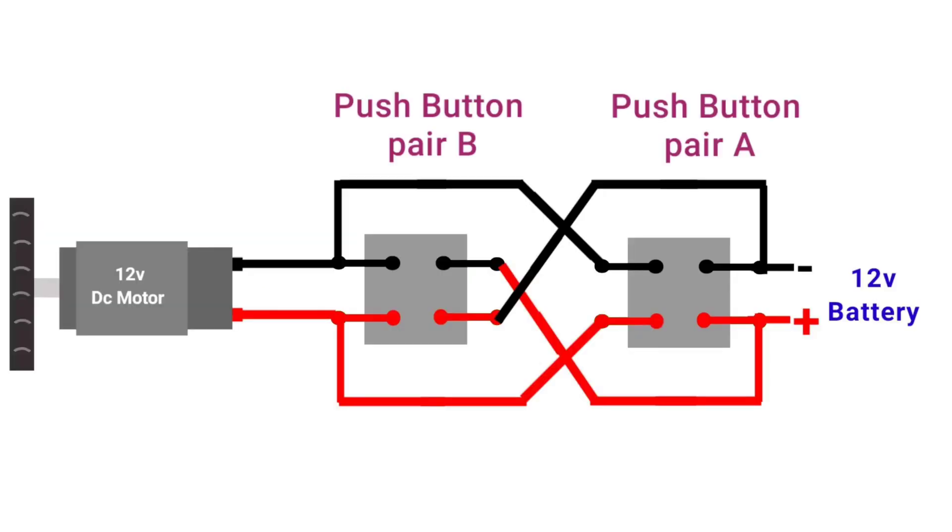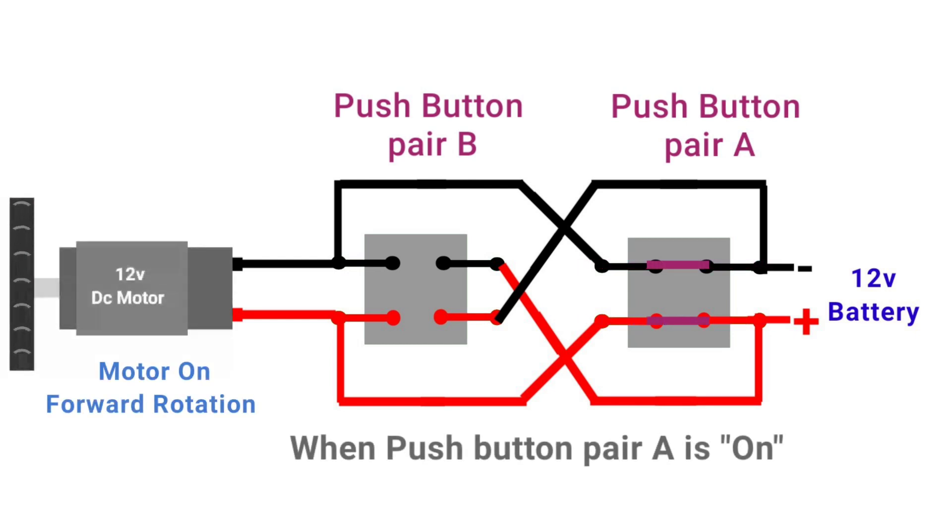Here we have push button pair A and push button pair B. When push button pair A is on, the positive terminal of the motor is connected to the positive terminal of the battery, and the negative to the negative terminal of the battery. So motor will rotate in forward direction.